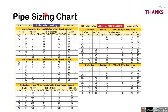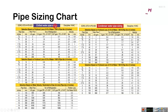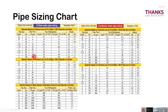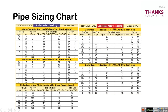The purple color chilled water pipe sizing chart is used for evaporator side pipe size. We want 240 GPM, so it matches with a 4-inch pipe — that is a 100 millimeter pipe.